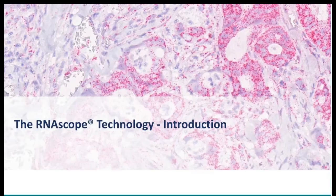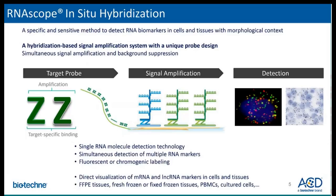What is RNAscope? The RNAscope assay is an in-situ hybridization technique that utilizes a unique double-Z target probe design, followed by a signal amplification system, which allows you to visualize a single mRNA transcript as a punctate dot through either chromogenic or fluorescent detection. This highly specialized system provides for simultaneous signal amplification and background suppression.